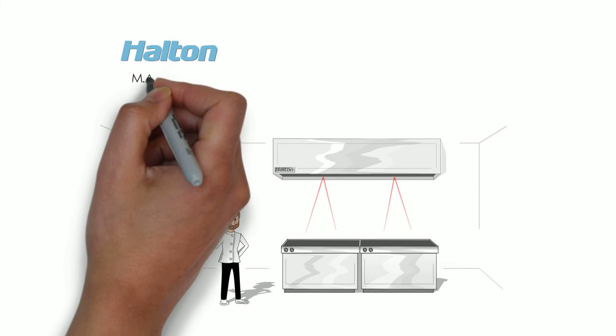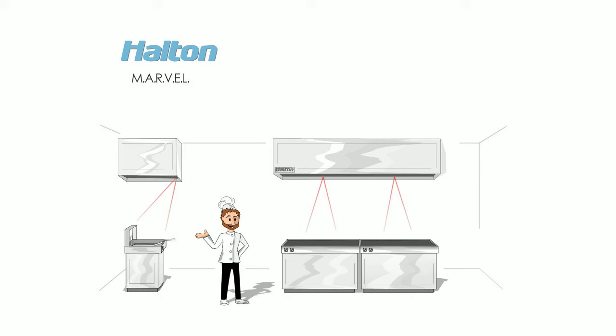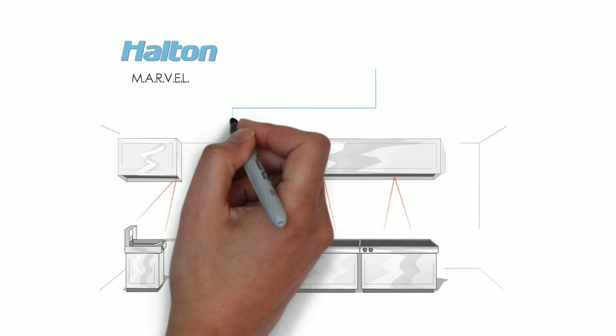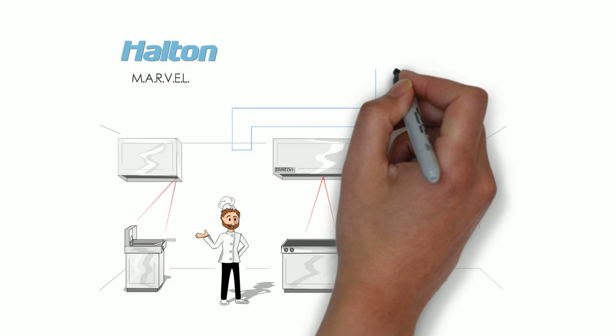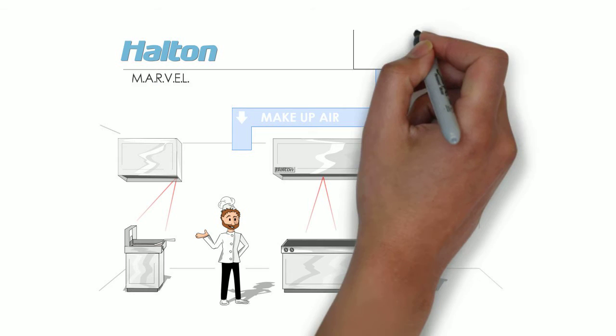Only Halton's Marvel system can identify when cooking equipment is powered on in the morning or shut down in the evening, thereby providing additional savings by preventing hoods from needlessly sucking the conditioned air out of the facility.